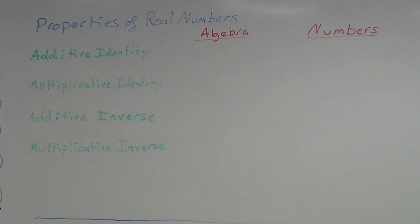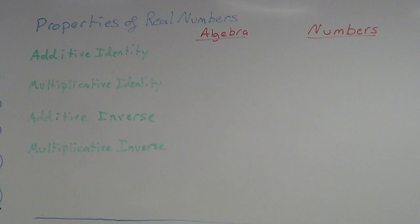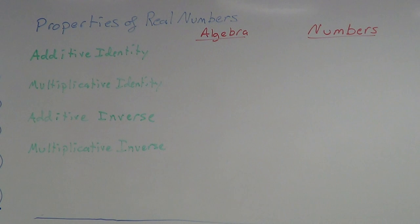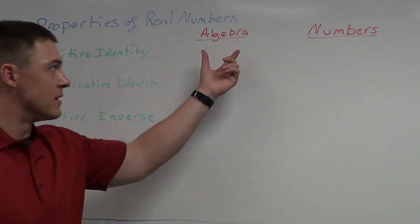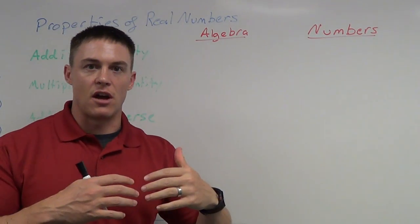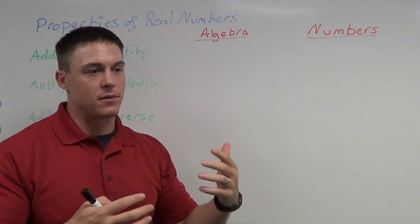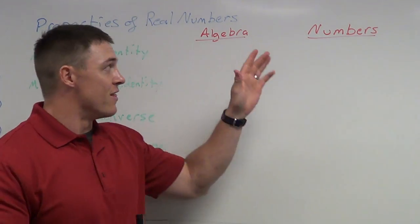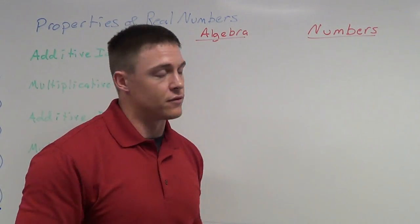Today we're going to talk about the properties of real numbers — just four of them, though there are many more. We're going to look at additive identity, multiplicative identity, additive inverse, and multiplicative inverse. What we're going to do is talk about the algebra first — using variables — and then talk about the same properties with numbers.